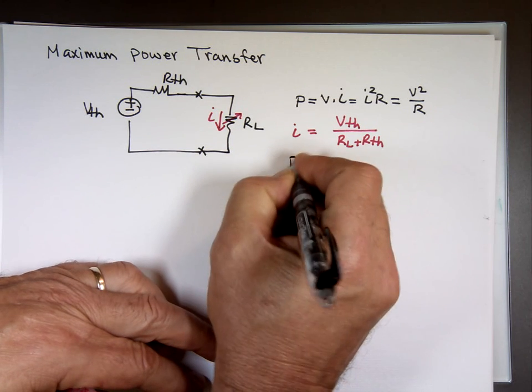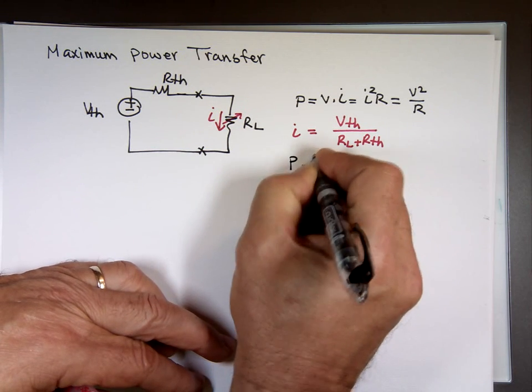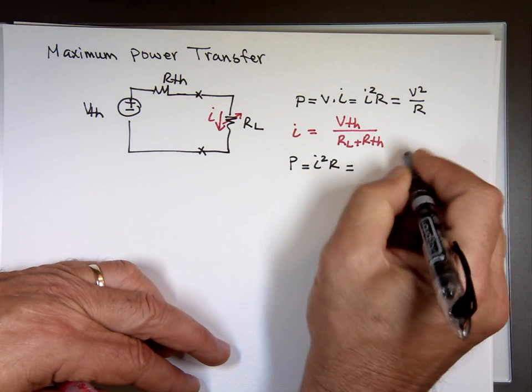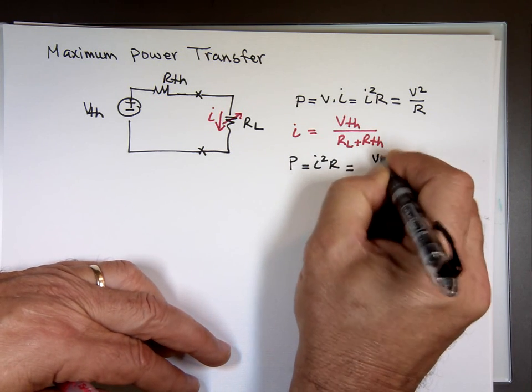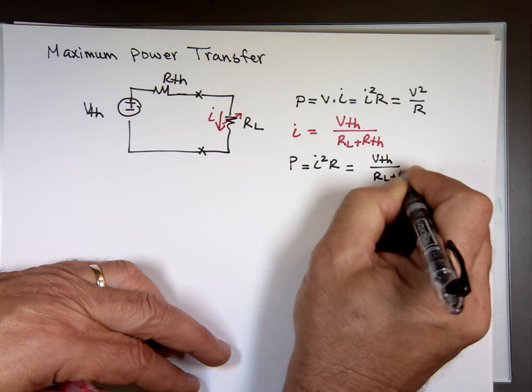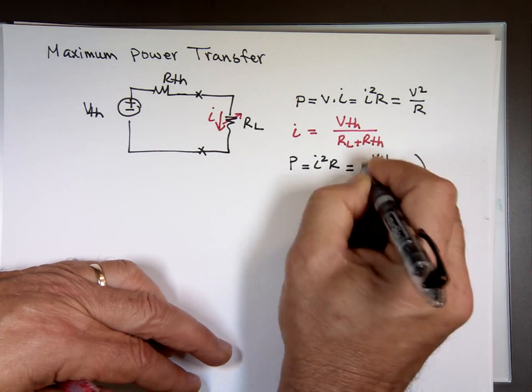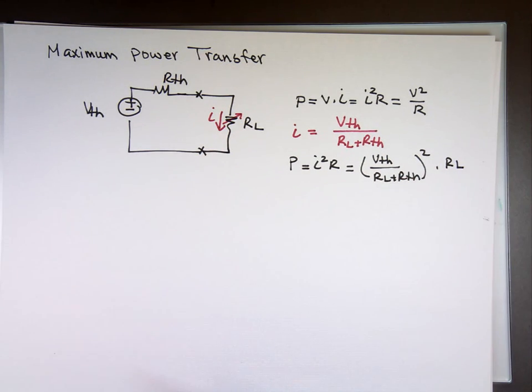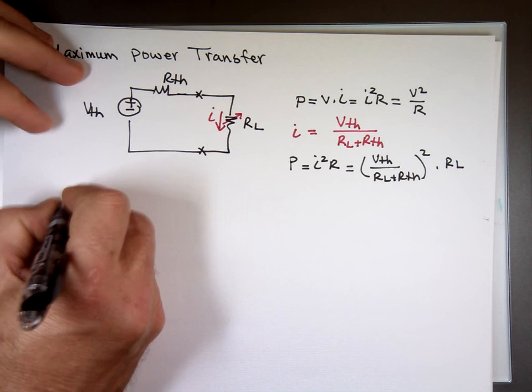That means the power here is going to be I, I'm going to use I squared times R, because I already have I. And if I plug it in, this will be V thevenin over RL plus R thevenin squared times the resistor here, which is R sub L, because we're talking about the load resistor.